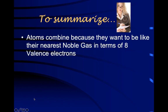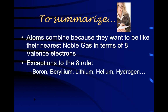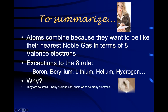To summarize: atoms combine because they want to be like their nearest noble gas in terms of eight valence electrons. There are a few exceptions to the octet rule — boron, beryllium, lithium, helium, and hydrogen. Why are they exceptions? They're just so small that their nucleus can't hold onto eight electrons. Their nearest noble gas is helium, which only has two valence electrons, so these elements are stable with just two valence electrons.